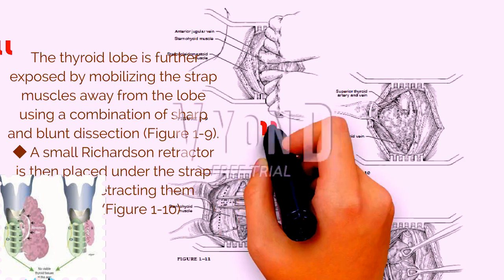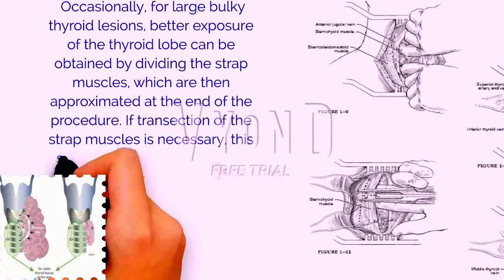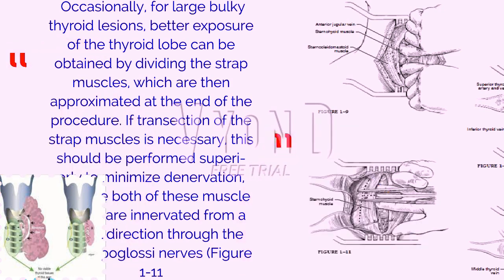The thyroid lobe is further exposed by mobilizing the strap muscles away from the lobe using a combination of sharp and blunt dissection, figure 1-9. A small Richardson retractor is then placed under the strap muscles, retracting them laterally, figure 1-10. Occasionally, for large bulky thyroid lesions, better exposure can be obtained by dividing the strap muscles, which are then approximated at the end of the procedure. If transection is necessary, this should be performed superiorly to minimize denervation, because both muscle groups are innervated from a caudal direction through the ansa hypoglossi nerves, figure 1-11.